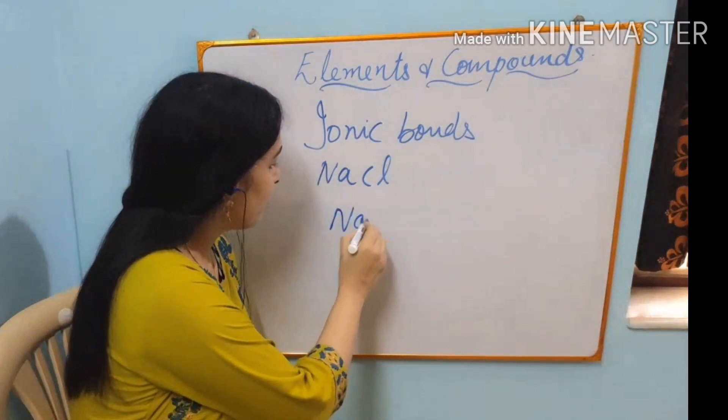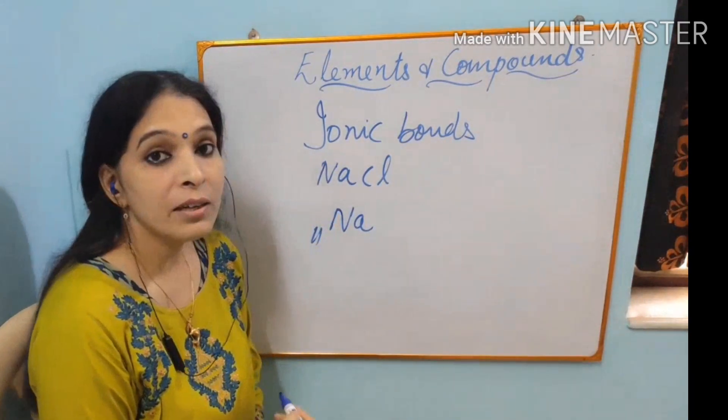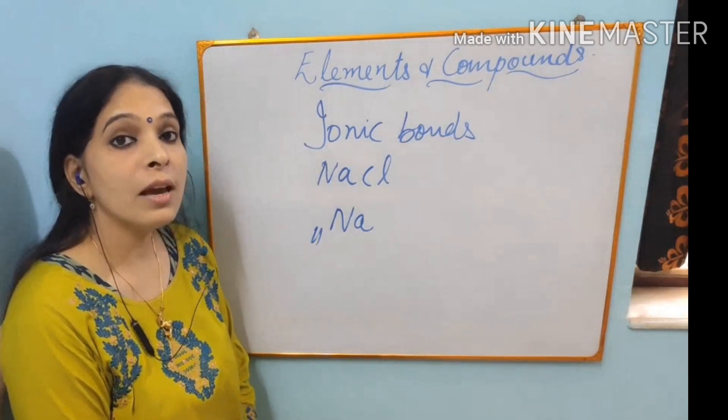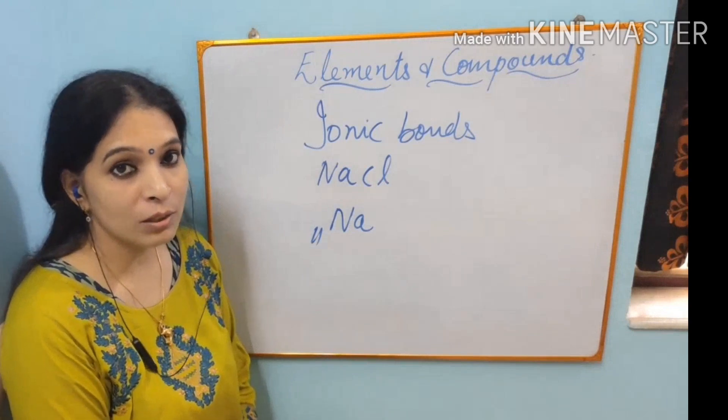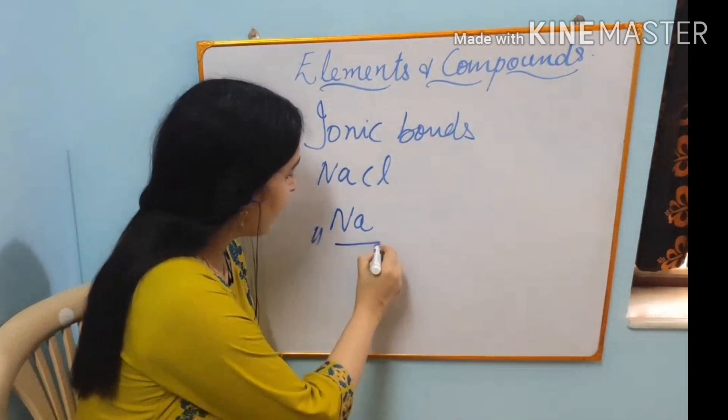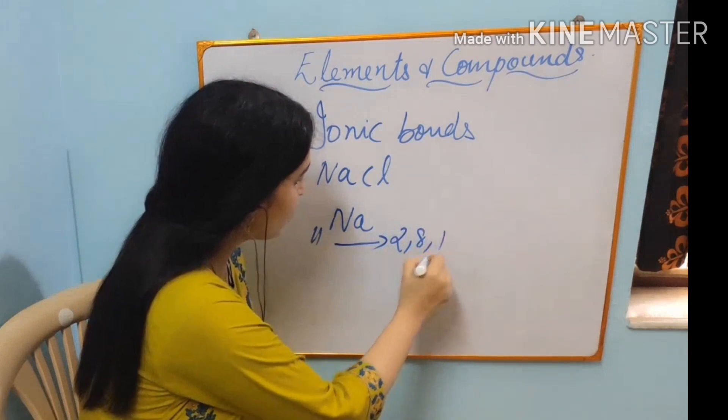The first step to study this process is to write the electronic configuration of sodium and chlorine. Sodium, atomic number 11. How to see the atomic number and how to write the electronic configuration? I have already explained in the last video. Any doubt? Please check that video.